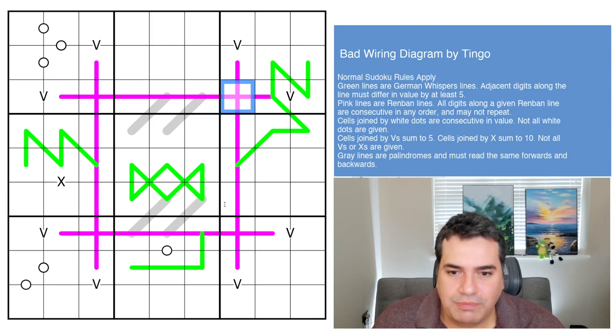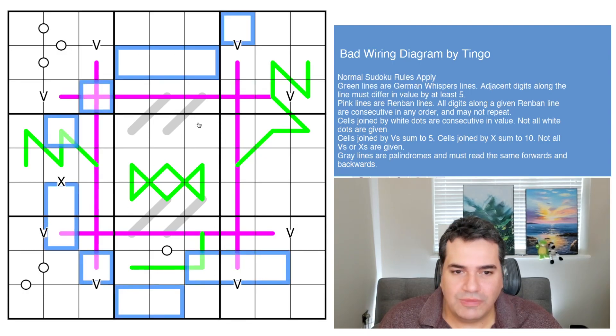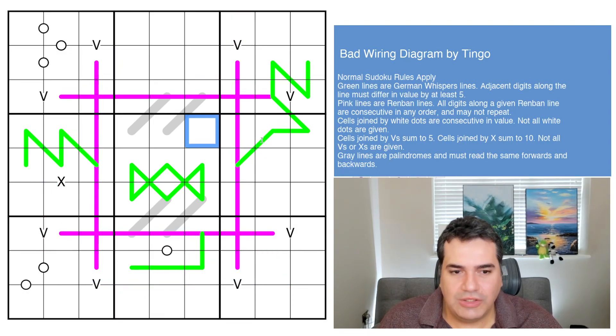As usual, for those of you that have been to the channel before, we are solving Sudoku variants, meaning there are Sudoku puzzles with a twist that allows us to fill in a grid that's completely devoid of any numbers. Tingo gave us zero digits to start. There are no digits anywhere to be seen in this grid. So it's really going to be up to us to use all the crumbs of clues that Tingo's placed for us to solve this case.